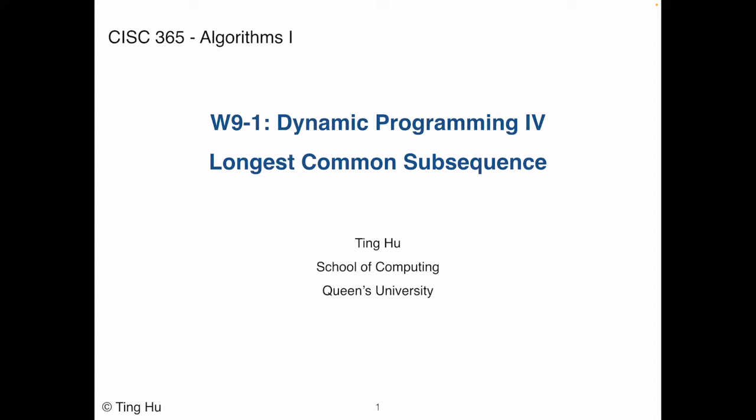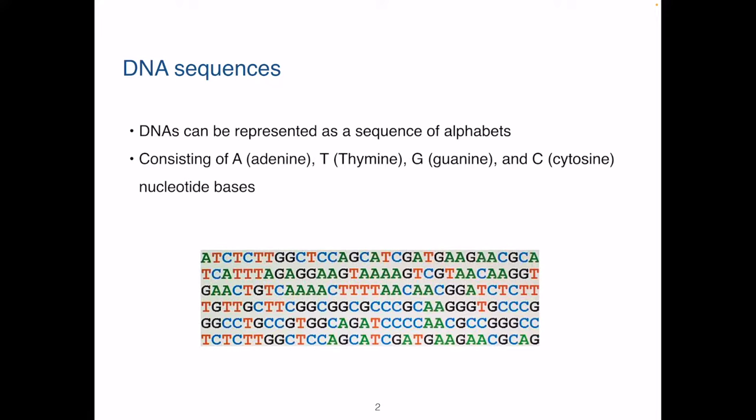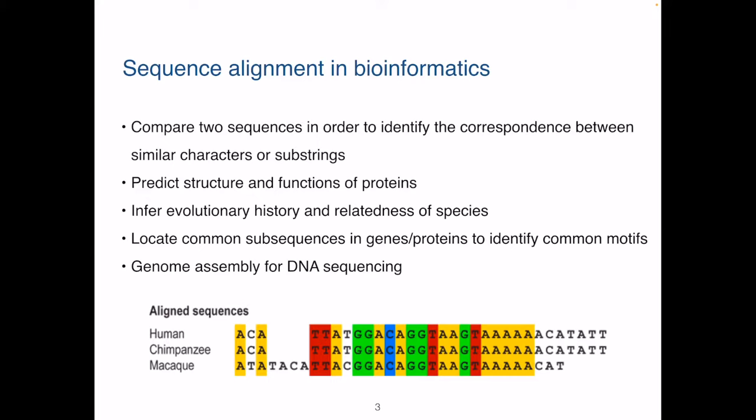In the first lecture of this week, we will talk about the longest common subsequence problem, which has wide applications in real world. Let's look at an example application of this problem first. We know a DNA sequence consists of four different nucleotide bases: adenine, thymine, guanine, and cytosine. We usually represent them using their initial letters A, T, G, and C.